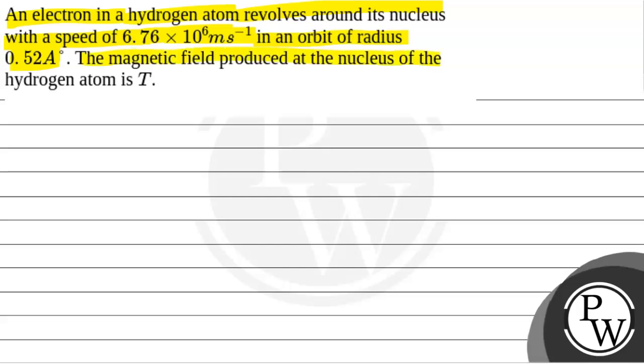in an orbit of radius 0.52 angstrom. The magnetic field produced at the nucleus of the hydrogen atom is T. We have to find the magnetic field produced at the nucleus of the hydrogen atom.